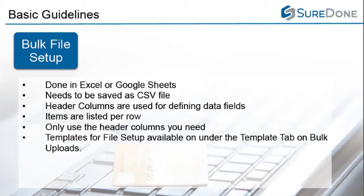We want to start with the basic guidelines for setting up the bulk file. First you'll need to work in Excel or Google Sheets, and you will need to save the file as a comma-separated value file, or CSV. The header columns across the top define what data field is being altered, and the products are listed one per row. We advise you to only use the necessary header columns, as adding a header and leaving that field blank will result in the overwriting of any existing values in that field.